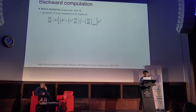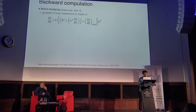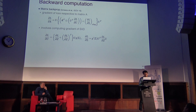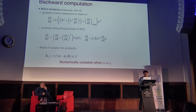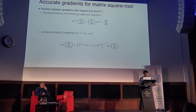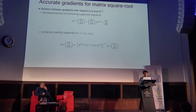To fine-tune the network, we have to compute the gradient of the loss with respect to matrix A, and in general it is difficult to compute. The matrix back-propagation network proposed in ICCV 2015 derived the gradient using the equation shown on screen, which involves computing the gradient of the singular value decomposition. The matrix K depends on the difference between two eigenvalues, and when two eigenvalues are close, the K value can go to infinity. So this gradient computation is numerically unstable and can have high error. For the particular case of matrix square root, we can compute the gradient exactly by solving the Lyapunov equation, which characterizes the relation between the gradient with respect to A and A's square root. Solving this equation is numerically more stable because it depends only on the inverse of the sum of the eigenvalues.